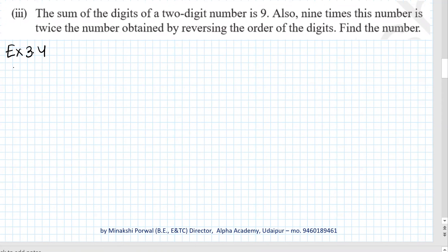Exercise 3.4, Question number 2, third part. The sum of digits of a two-digit number is 9. Also, nine times this number is twice the number obtained by reversing the order of digits. Find the number.